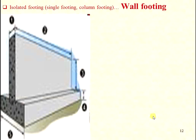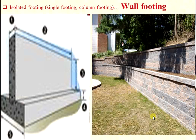Isolated footing on a wall is called wall footing. This type of wall footing is useful for open spectator areas or open theaters.